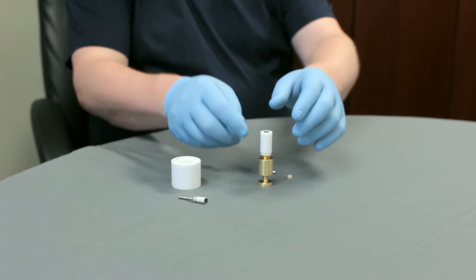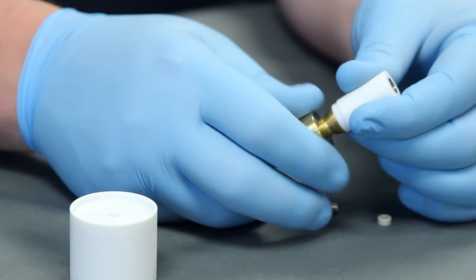Now let's continue to reassemble the tip for use and remove the tip from the disk core ejector.